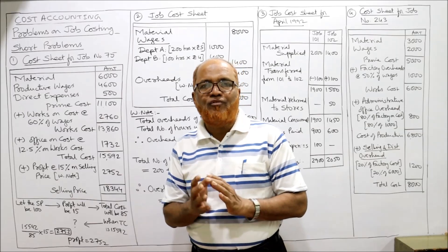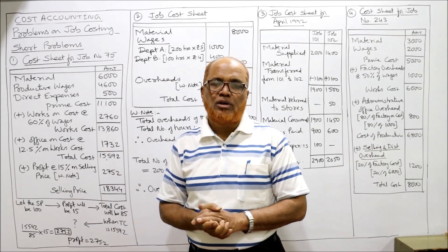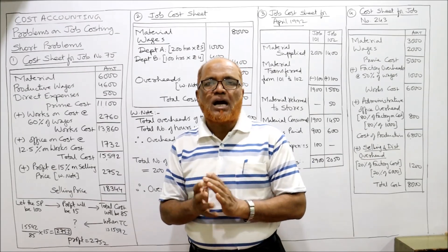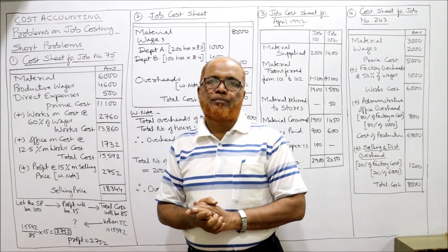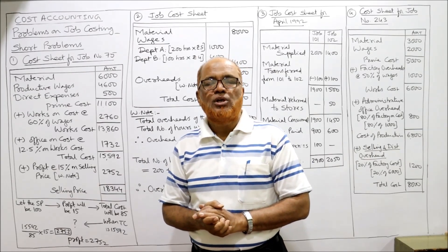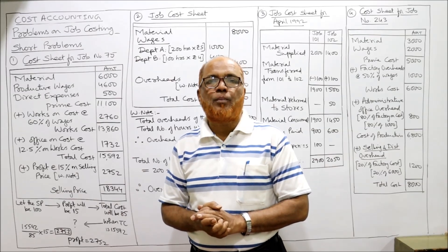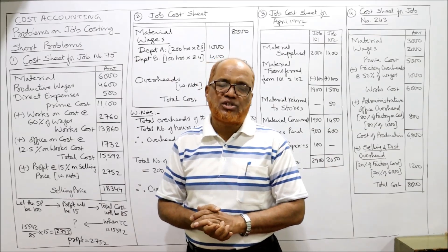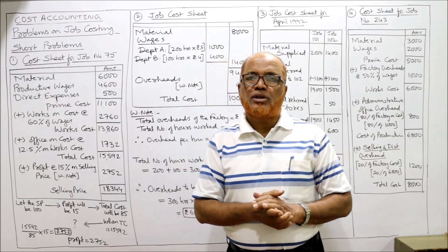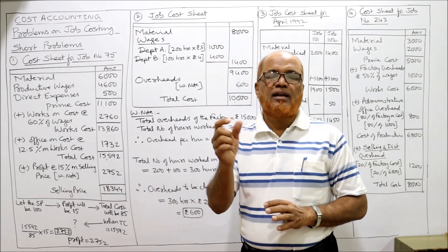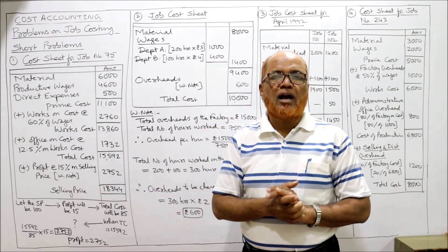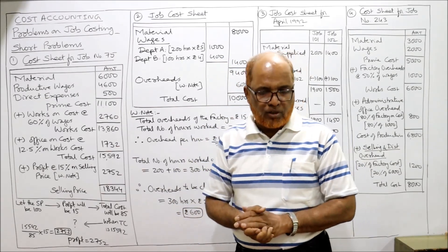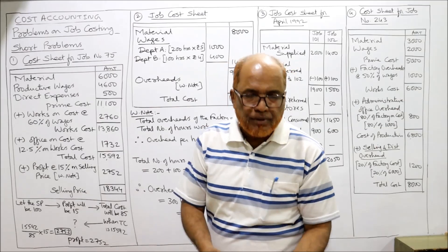First we will solve four short problems on job costing, then we will go to the main problems. But before starting, I request viewers to get a hard copy of the problems from the link in my description. In the last line you will find the link. Get a printout of the problems and keep it ready before watching the video.